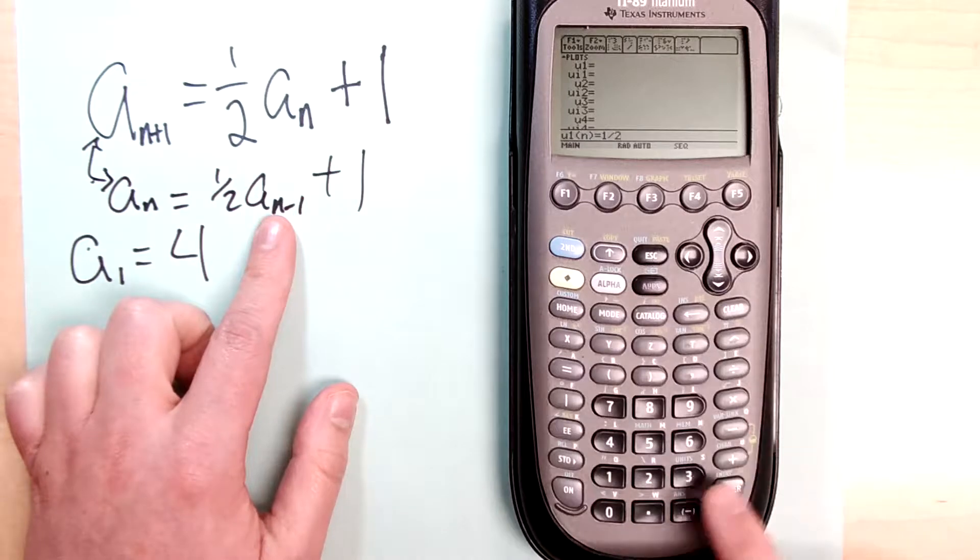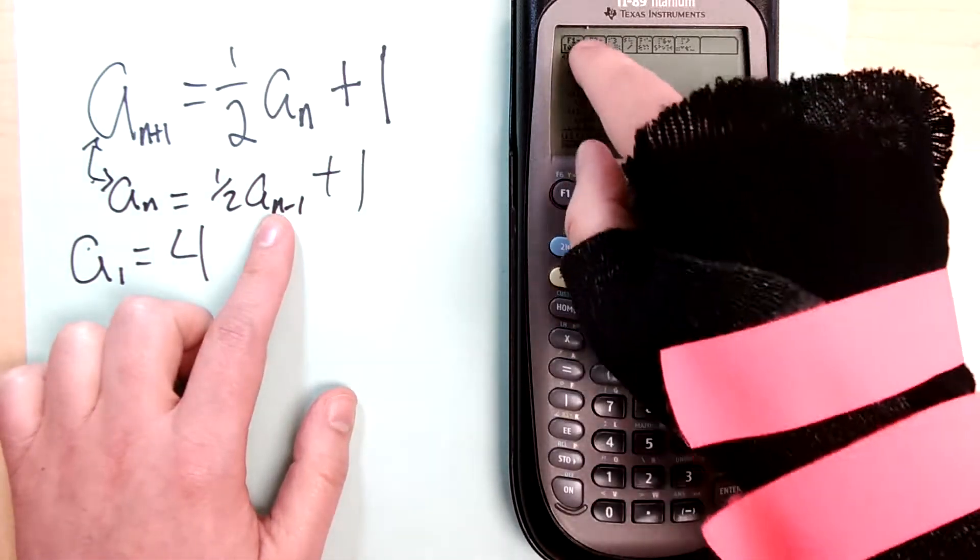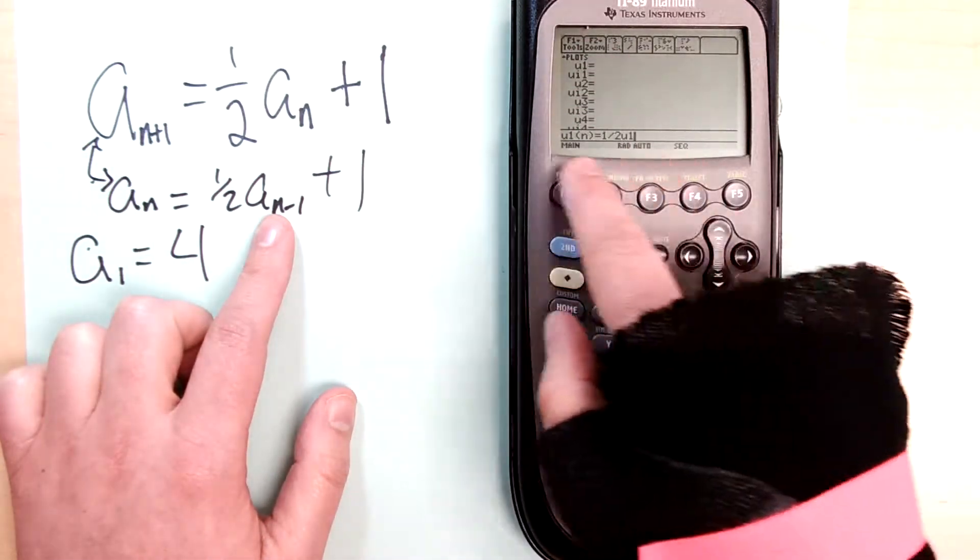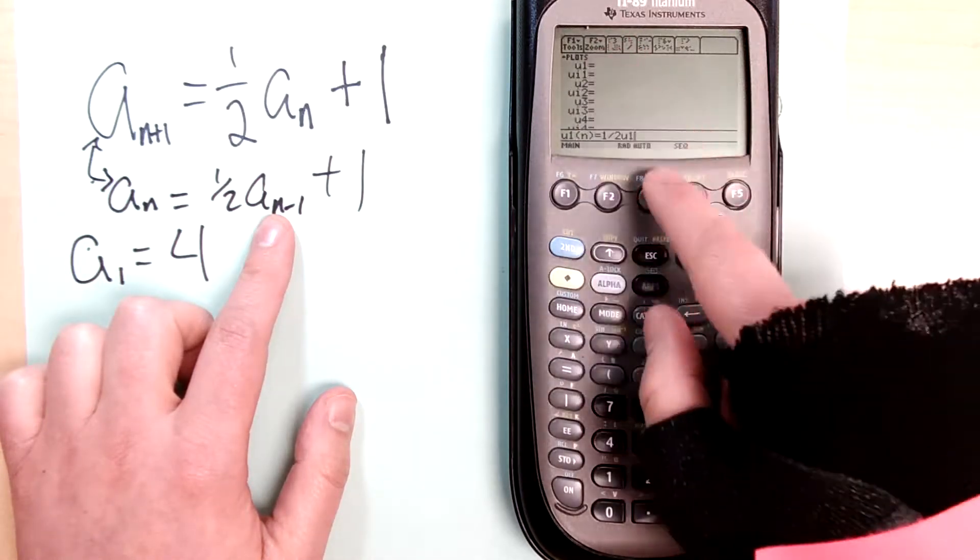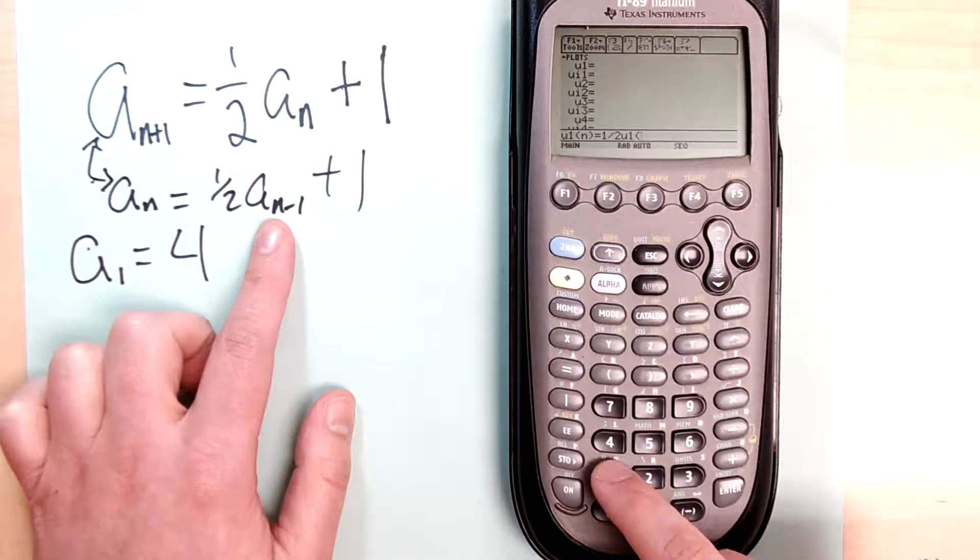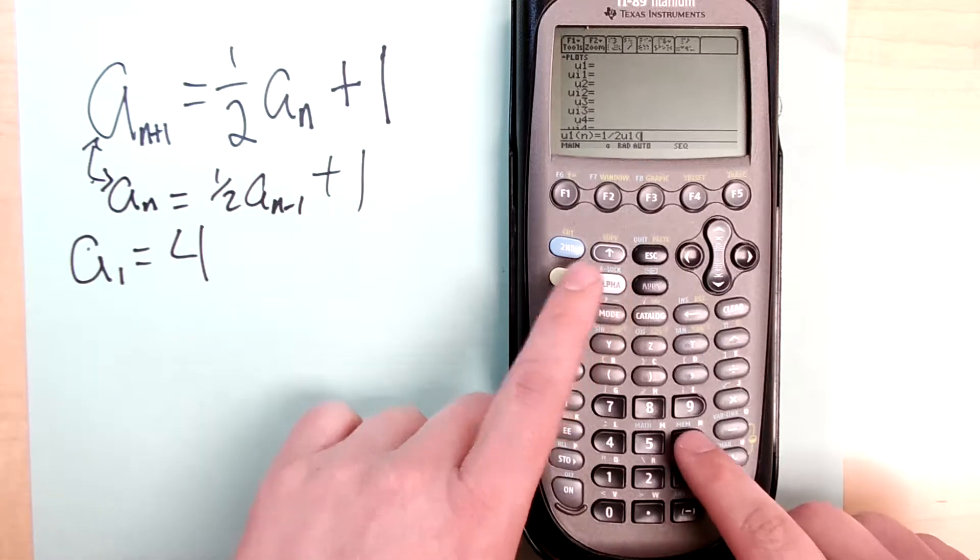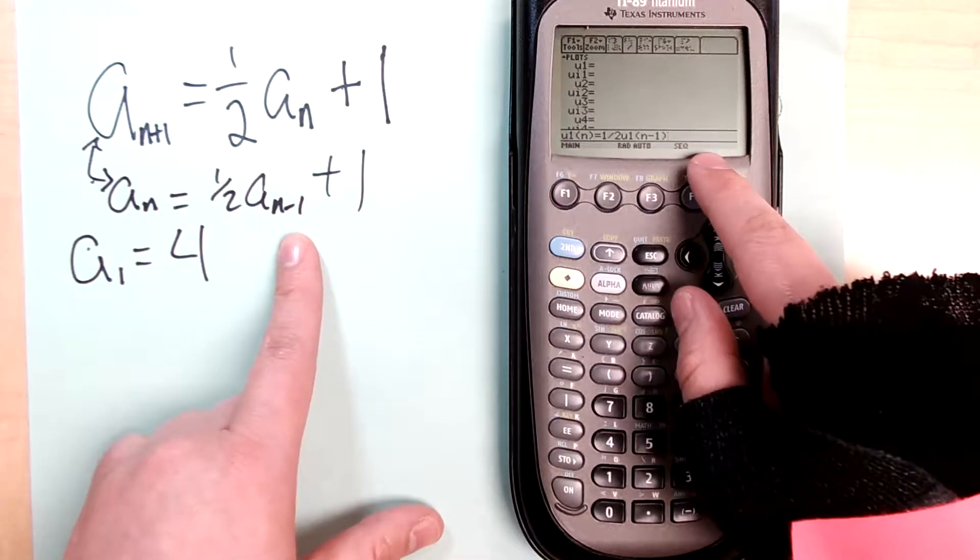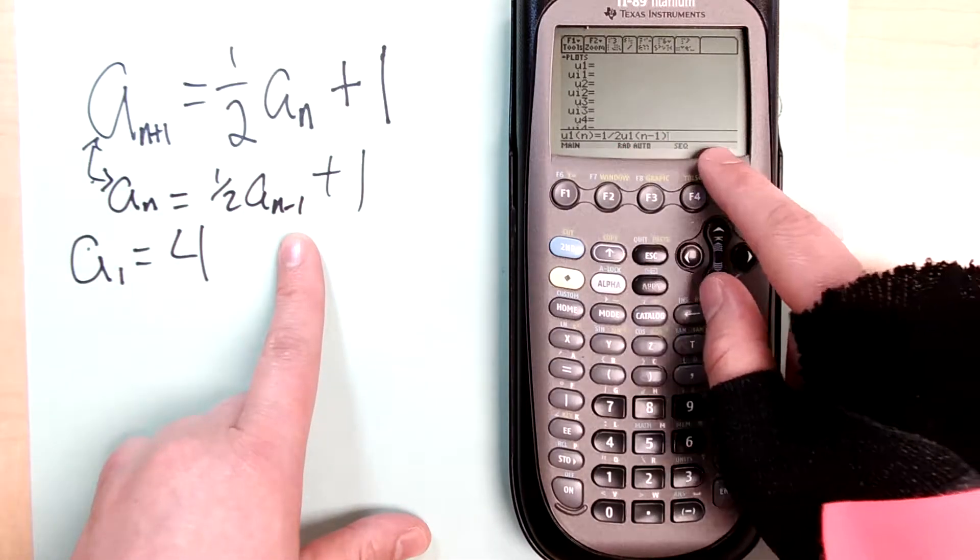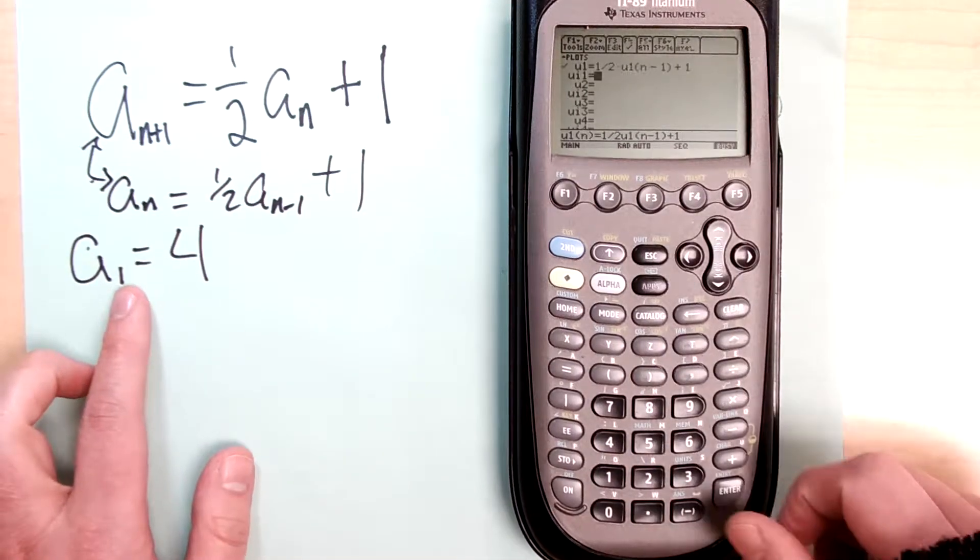So one-half. To get u, we're going to go alpha plus sign, that'll give us u. Which u? We want u1 because that's the one we're talking about. So u1 of parentheses, I need to know which term it is, so I need to go alpha n, so n-1. And then plus one. So there's what my recursion looks like.